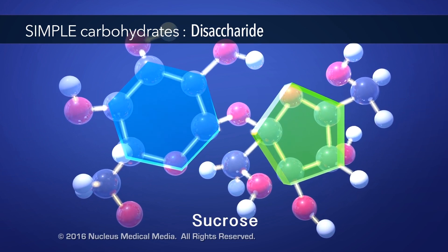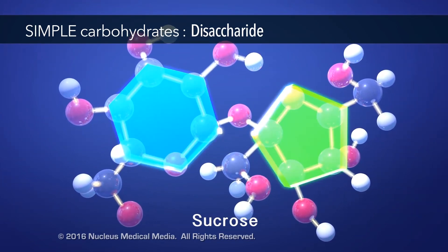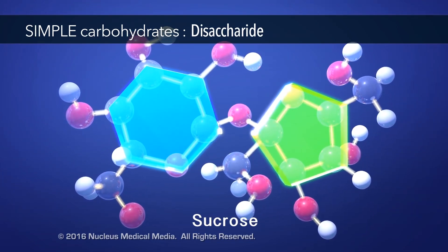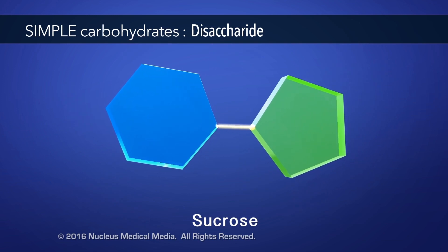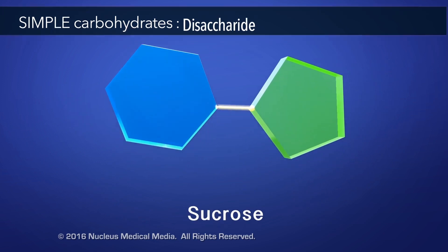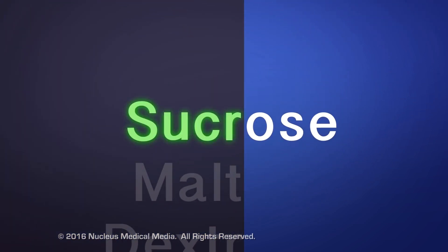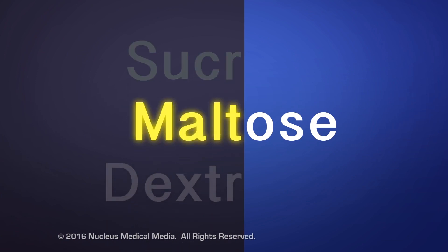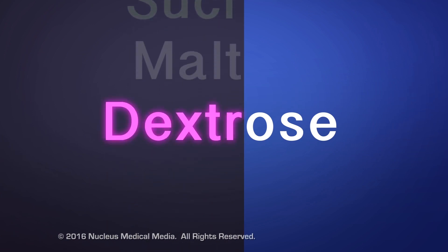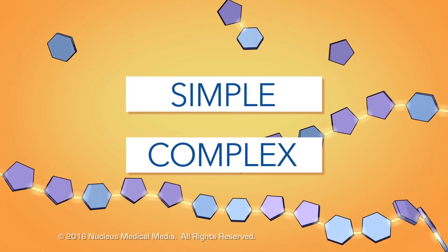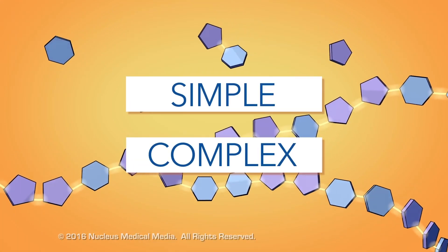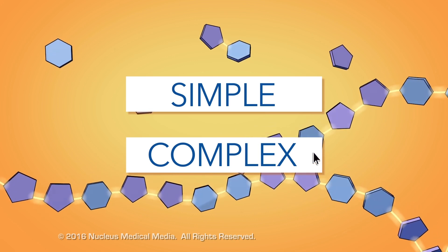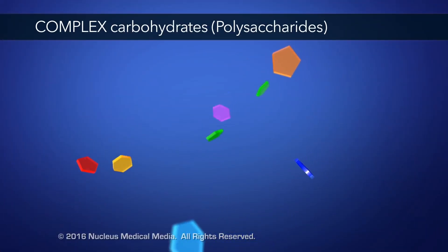Sucrose is a disaccharide because it's made up of two monosaccharides. Like monosaccharides, disaccharides such as sucrose also end in -ose because they're sugar molecules. Now let's talk about complex carbohydrates, also known as polysaccharides.